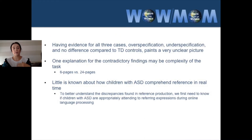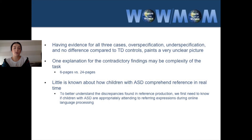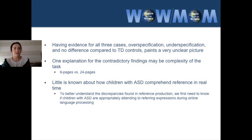Having evidence for all three cases — over-specification, under-specification, and no difference compared to TD controls — paints a very unclear picture. One explanation for the contradictory findings may be task complexity. In a relatively simple task, such as the six-page, two-character storybook, children with ASD perform similarly to TD controls and are able to take the listener's perspective into account. However, as the context becomes increasingly complex, keeping track of reference is more cognitively demanding and requires greater executive functioning. Little is known about how children with ASD comprehend reference in real time, and to better understand discrepancies found in production, we first need to know if children with ASD are appropriately attending to referring expressions during online language processing.